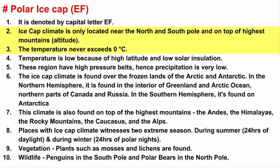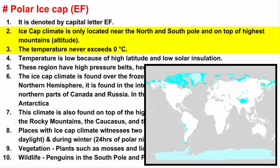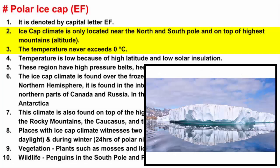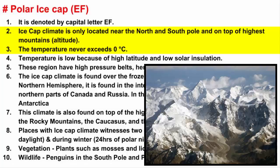Ice cap climate is only located near the poles. It is a polar climate where the temperature never exceeds 0 degrees Celsius. The ice cap climate experiences the coldest temperatures on Earth. Such areas are found around the north and south pole and on top of the highest mountains.